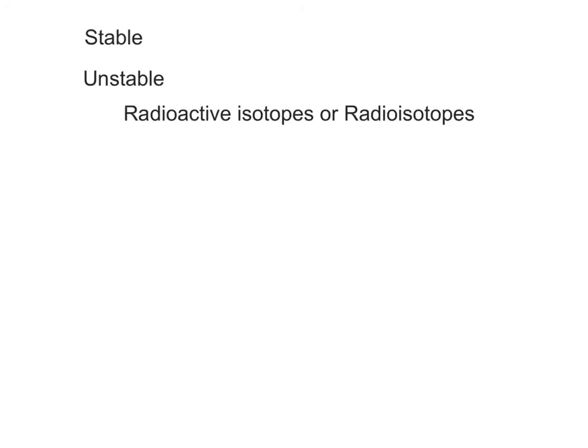Most isotopes are stable, which means that the structure of their nucleus does not change over time. Some isotopes, however, are unstable and are called radioactive isotopes or radioisotopes. The nucleus of a radioisotope is in a state of spontaneous decay or change as it moves into a more stable configuration.